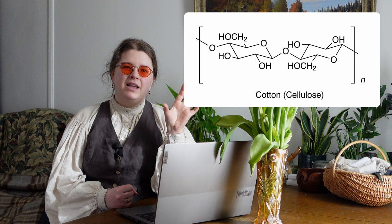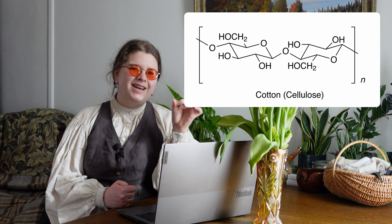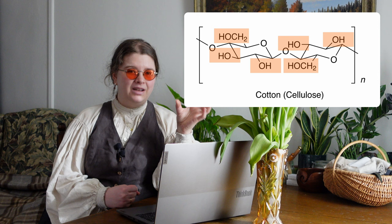Cotton is a cellulose-based fibre. That is the molecular structure of cellulose right there. The brackets and the N here means that the real structure is actually a long chain of these on repeat. The important thing to notice is how cotton also has several of these oxygen and hydrogen groups that we saw in indigo — it is stable, but it has the potential to interact with other molecules.